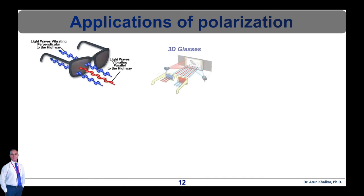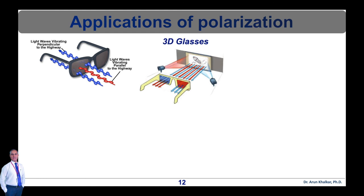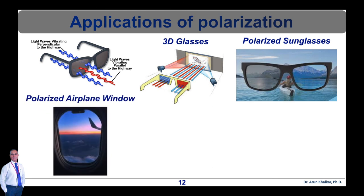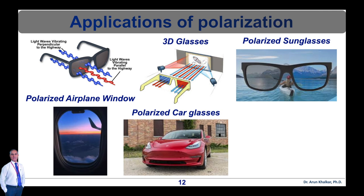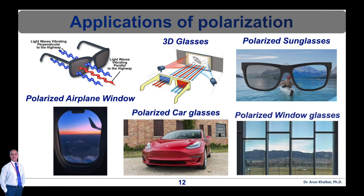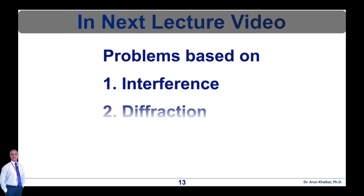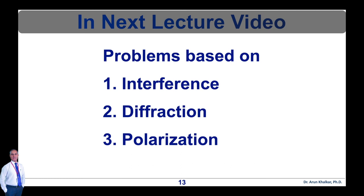There are several other examples of polarization. Polarization is used in sunglasses to reduce glare. Three-dimensional movies are produced and shown with the help of polarization. Polarized airplane windows work on the polarization phenomenon. Similarly, polarized car glasses and polarized window glasses use polarization to reduce glare. This is all about the polarization phenomenon. In my next lecture video, I will discuss problem solving based on interference, diffraction, and polarization, so please don't miss it.